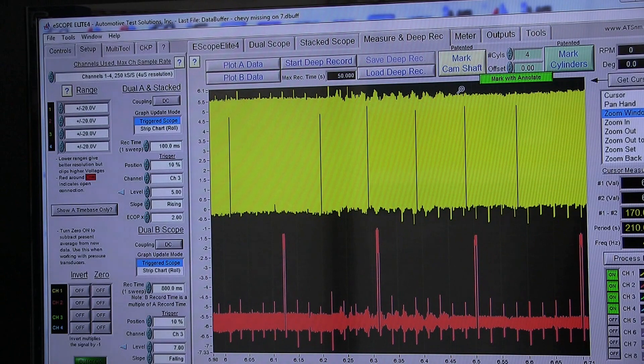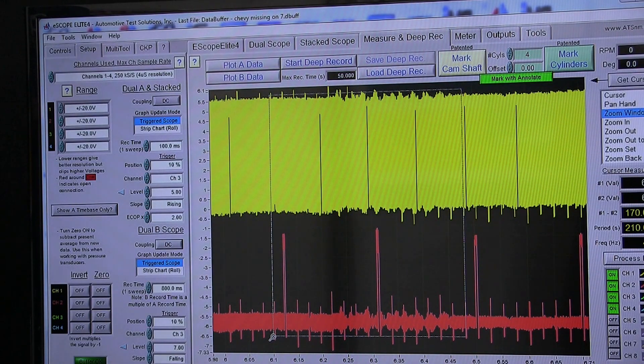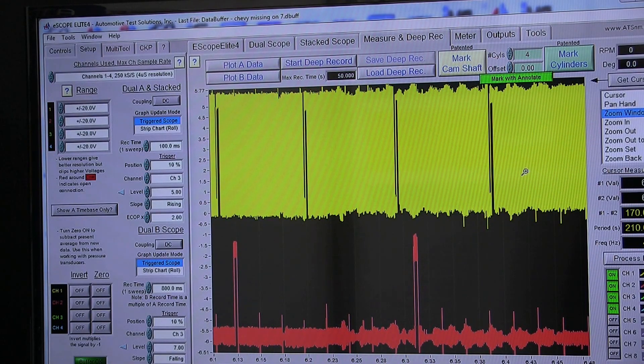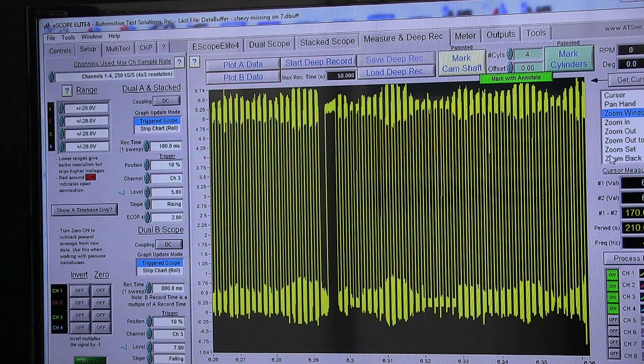Now we can see that what we really have is a basic crankshaft position sensor waveform and the coil fire for number one. Let's go ahead and further decode this.